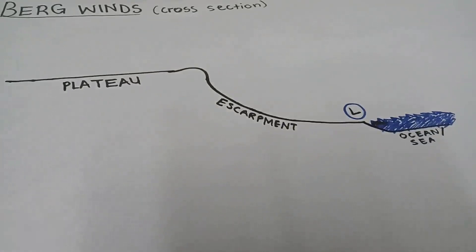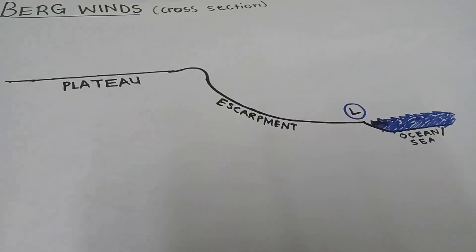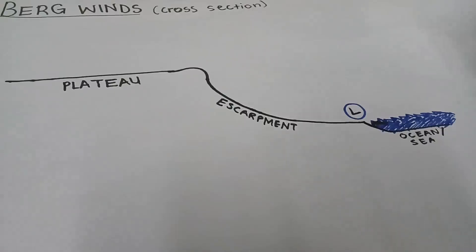So this is the cross section illustration of a Berg wind. You should also understand that this is the same as a synoptic chart. So, what happens basically for these Berg winds to form?